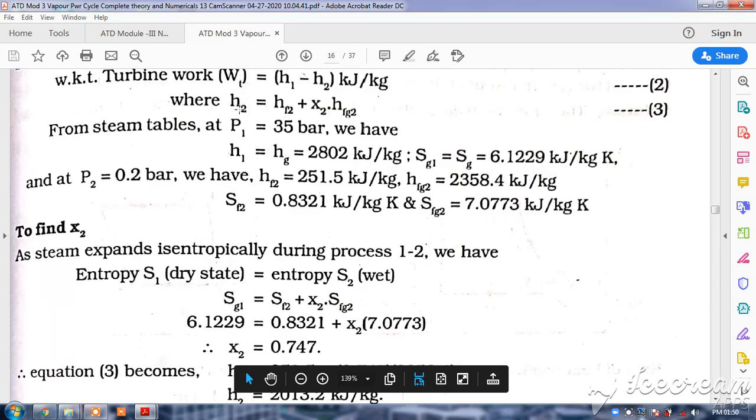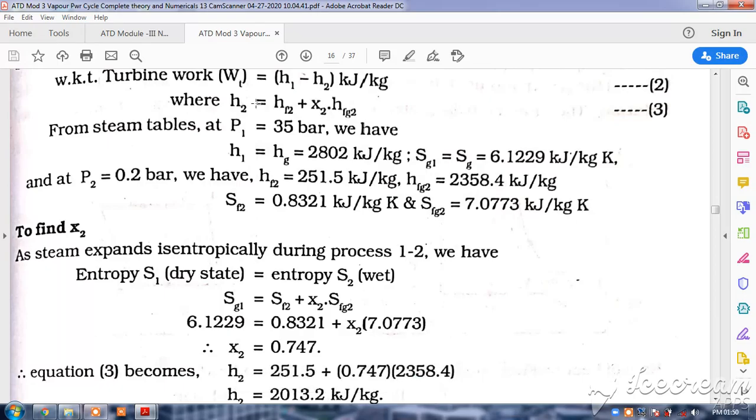So this way you calculate the dryness fraction, and after calculating the dryness fraction, then you go to the enthalpy equation: H2 is equal to Hf2 plus x2 into Hfg2. We are going to find out H2. Hf2 is available from the data book steam table and Hfg2 is also available from the data book. This x2 you are calculating from the entropy equation.